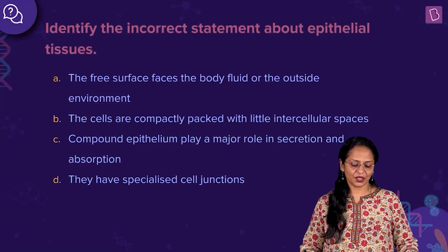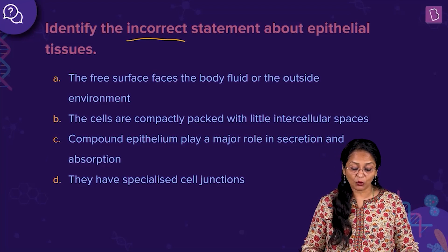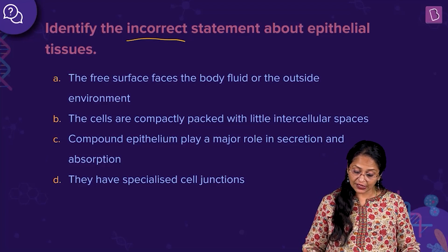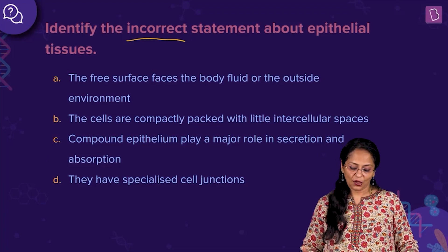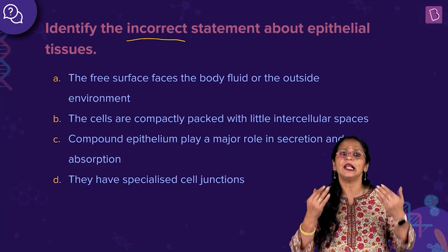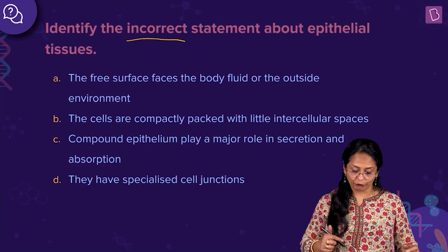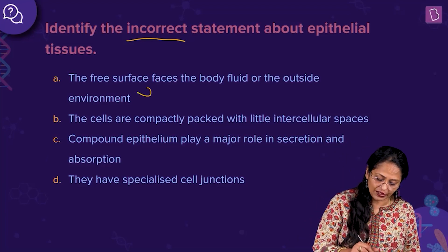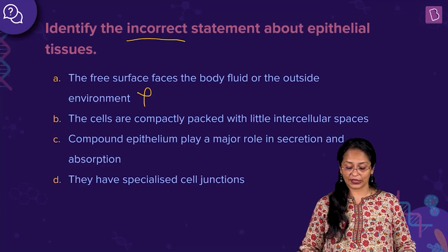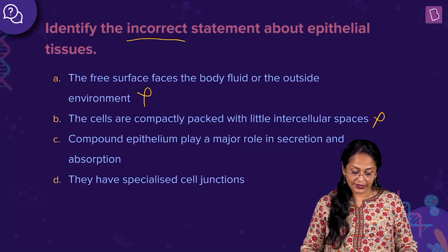Now let us look at this interesting question. You need to identify the incorrect statement about epithelial tissues. Let us look at the first statement: 'The free surface faces the body fluid or the outside environment.' Yes, this is correct — epithelial tissues line an organ and face either the external environment or the body fluid. But we need the incorrect statement, so we move on. 'Cells are compactly packed with little intercellular spaces' — also correct, but again not the incorrect statement. 'Compound epithelium plays a major role in secretion and absorption' — no, this is incorrect.